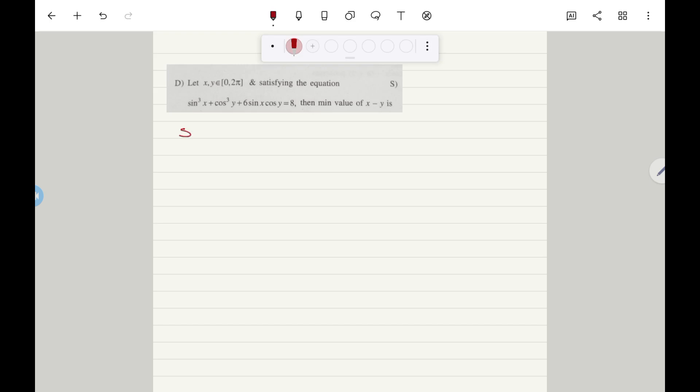So the given equation is sin³x + cos³y + 6sinx·cosy - 8 = 0. I can rewrite it as sin³x + cos³y, so instead of minus 8 I am writing it as plus times of (-2)³, and this plus 6sinx·cosy is written as minus 3 times sinx into cosy into (-2) equal to 0.